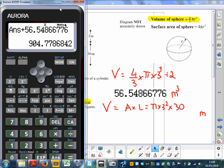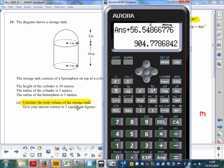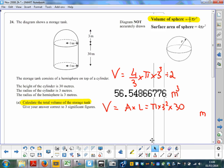It's 904 point something, but because the answer has to be to 3 significant figures - 1, 2, and 3 - we round up, so the answer is 905 cubic meters.